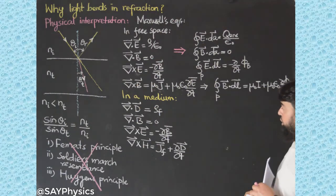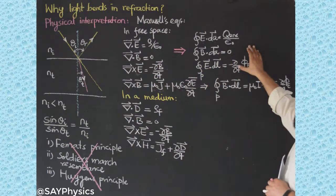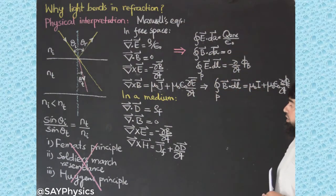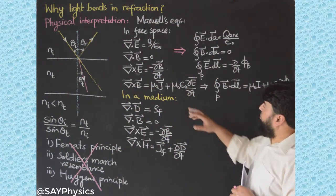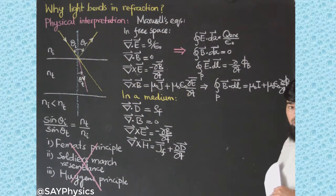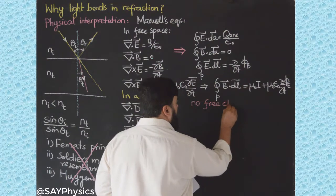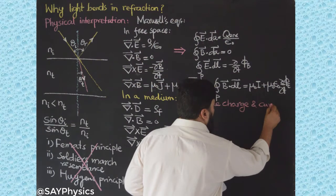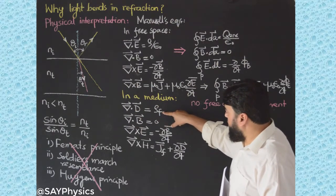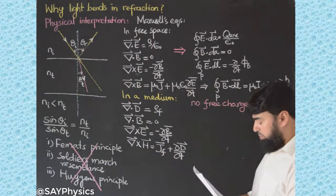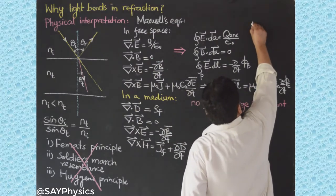Based on these equations we can derive the boundary conditions. We will cover how boundary conditions are derived when we cover electrodynamics. For now, I will write them directly. I impose the conditions that there is no free charge and no free current, so rho_f equals zero and J_f equals zero.